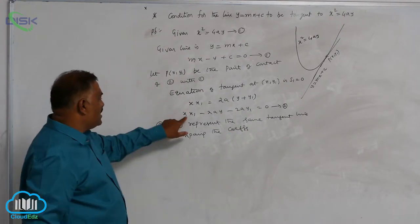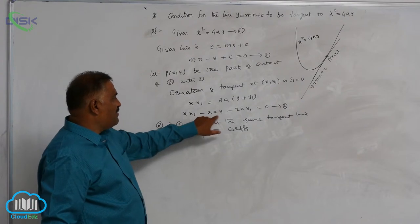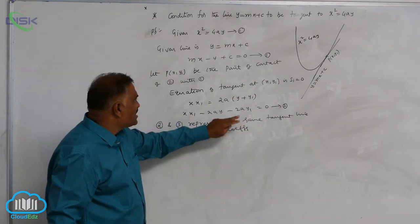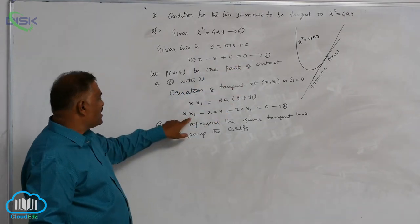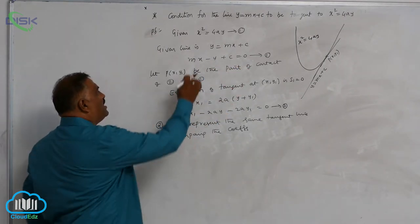What do you get now? You see xx1 minus 2ay minus 2ay1 is compared with mx minus y plus c. See, coefficient of x is x1 here, here m.